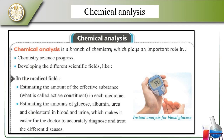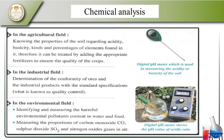In the agriculture field, chemical analysis is used to determine properties of the soil regarding acidity, basicity, and the concentration of elements present — then appropriate fertilizers are added according to the quality of the crops.